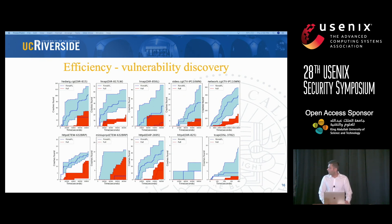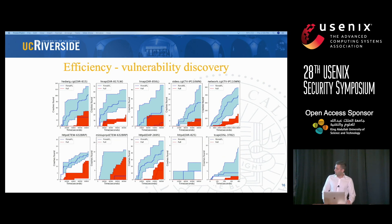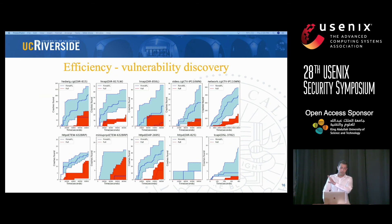We also measured how efficient FirmAFL is. Each chart presents our measurement for one IoT device. The Y-axis reports the number of unique crashes found, and the X-axis reports the time in seconds. The blue area is the result of our work, and the red area is the full system emulation result. As you can see, our approach in blue outperforms full system emulation in all cases — in most cases it's 10 times faster, in a few cases three times, but in all cases it outperforms full system emulation. You see an area instead of a single line because we do measurements 10 times and report lower bound, upper bound, and median.